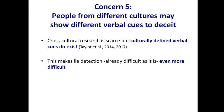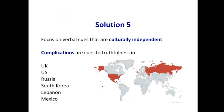Finally, concern number five: people from different cultures may show different verbal cues to deceit, and we know that. Cross-cultural research has shown that some cues are diagnostic in some cultures and not in others. We even know that some cues are diagnostic for truthfulness in some cultures but for deceit in other cultures — that makes lie detection extremely difficult. The solution is to try to focus on cues that are culturally independent. Lie detection is already difficult enough for investigators; if you also have to say 'in this culture think about that, in that culture something else,' it becomes, in our view, far too difficult. So focus on cues that are truly cues to deceit or truthfulness across different cultures.